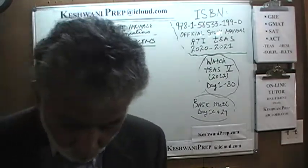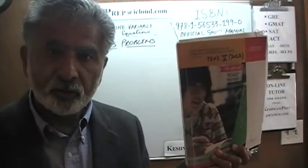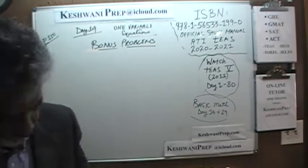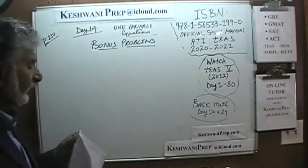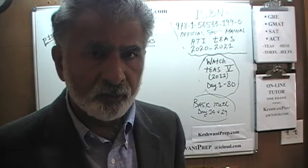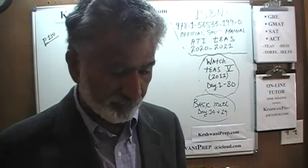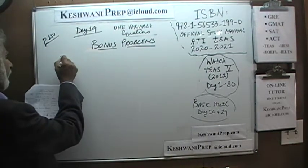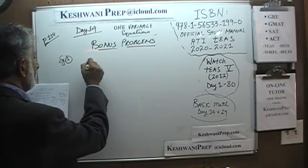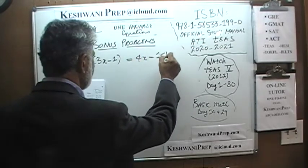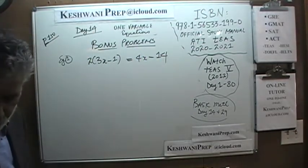You will find solutions to all the problems from the 2012 edition. Today we are going to do three problems straight out of this book. As soon as I put the problem on the blackboard, pause the video and do it yourself. Then resume the video and compare your work against what we do together — you will get more out of it that way. Example number one: 2 times 3x minus 1 is equal to 4x minus 14.